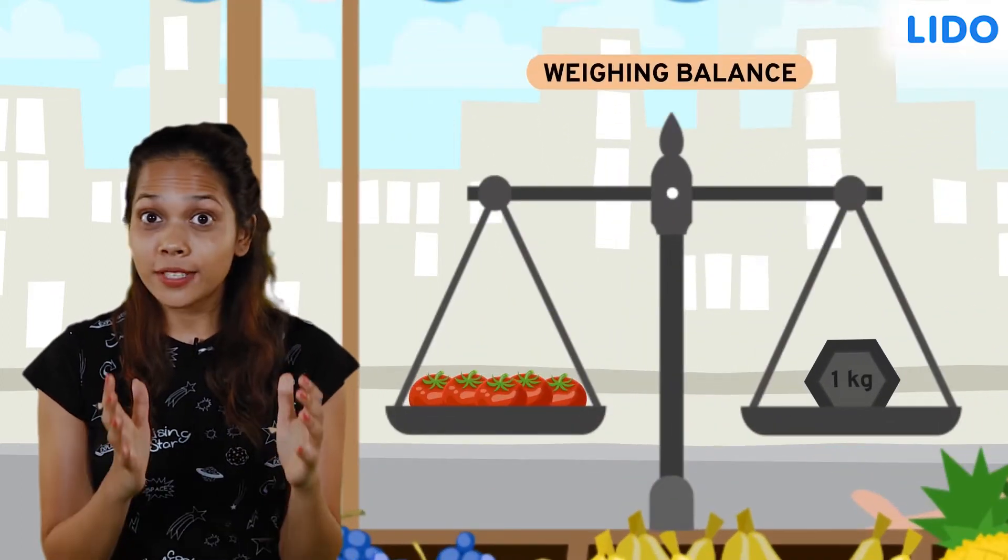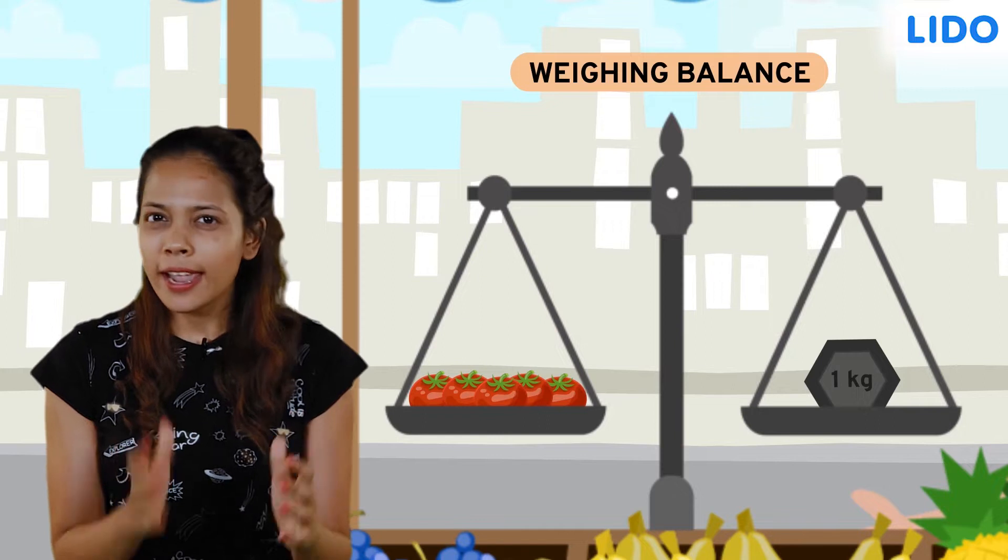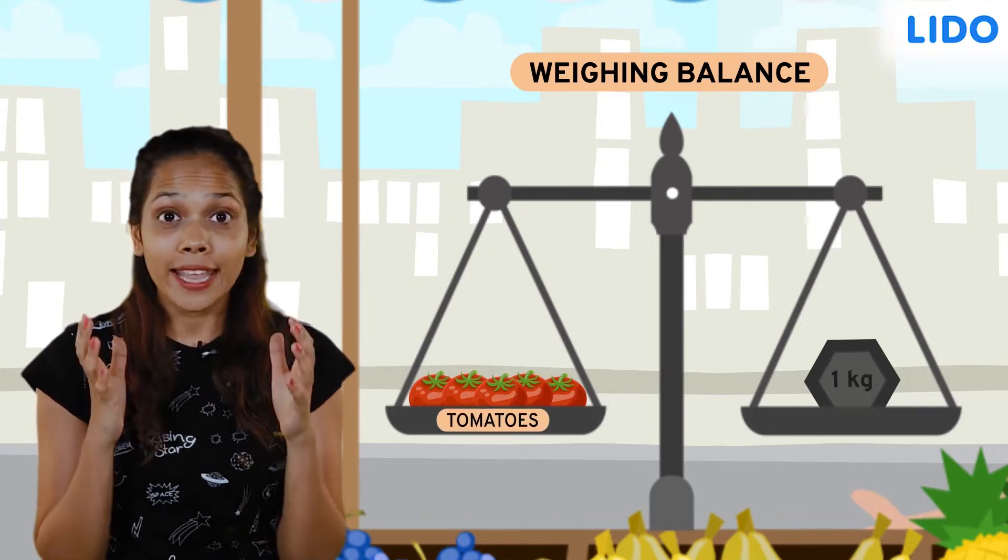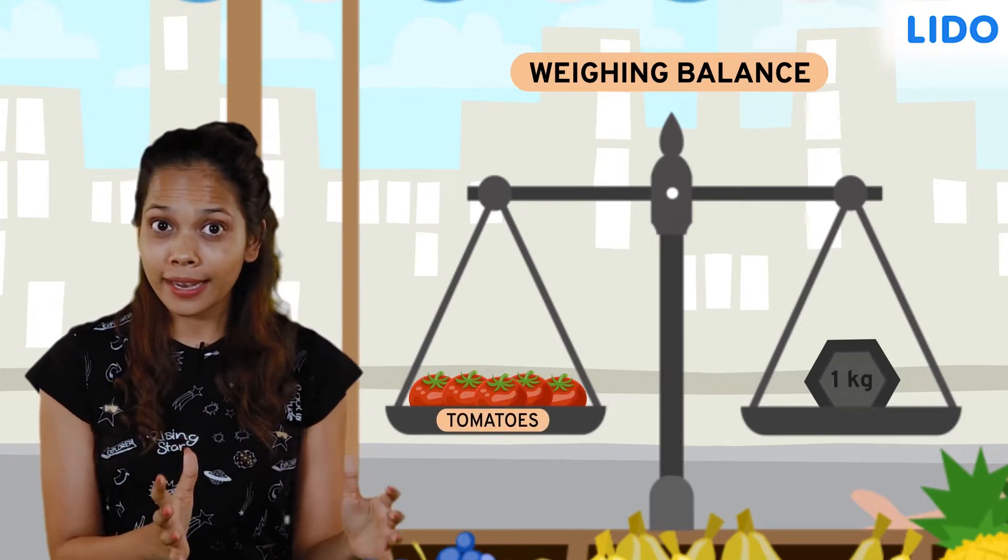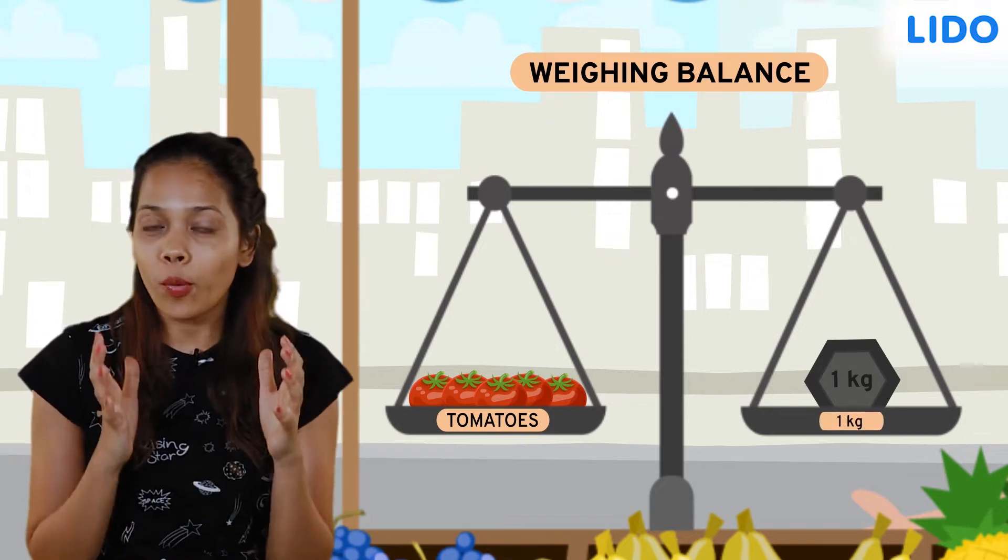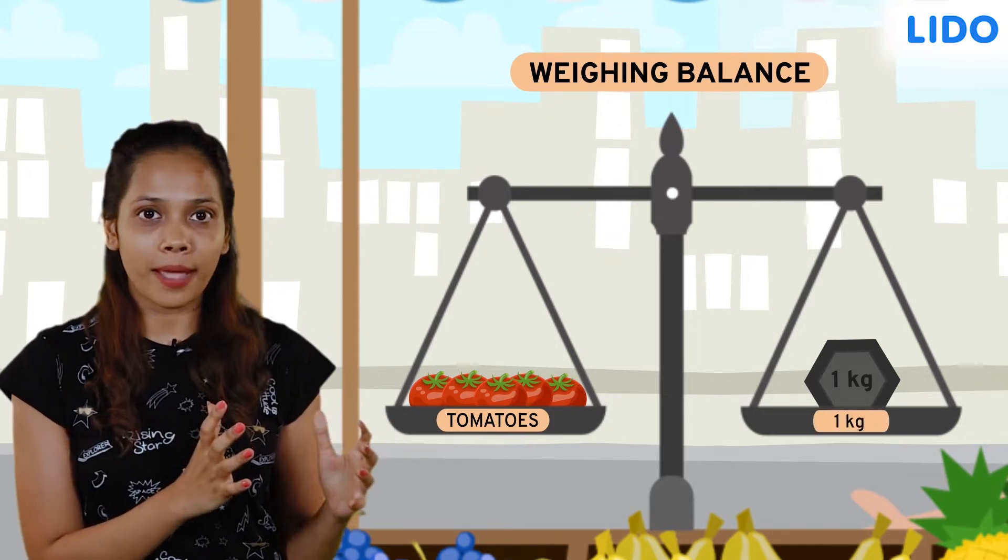Look, the vegetable vendor is using the weighing balance to check if the weight of the tomatoes he has put on the left side of the pan is the same as the weight of the 1 kg block he has put on the right side of the pan.